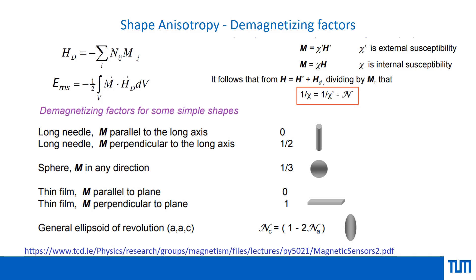If the field is not applied along the direction where the demagnetization factor is zero, corrections are required. For a needle-like sample, applying the field parallel to the long axis requires no correction, but perpendicular application needs correction factors. In some materials shape anisotropy dominates, in others magnetocrystalline anisotropy dominates — to get a full picture, one must account for both the sample shape and the crystalline anisotropy energies.